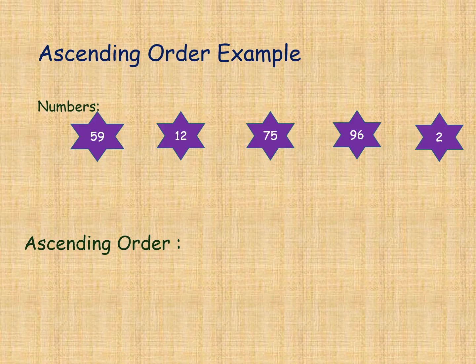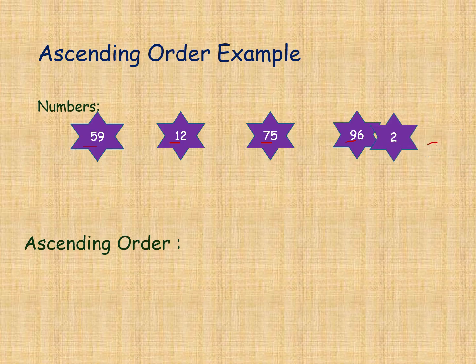Here is an example of ascending order. We are taking some random numbers like 59, 12, 75, 96, and 2. In these five numbers, which is the smallest? First we should compare the tens places: 5, 1, 7, 9, and here 0. The number 2 is a single digit, so 2 is coming first.